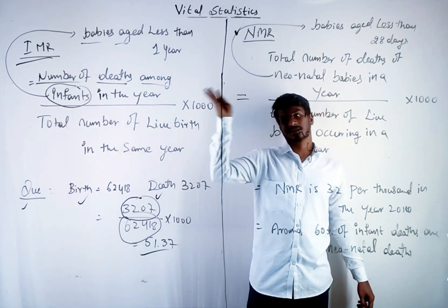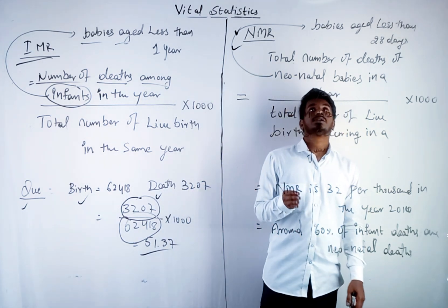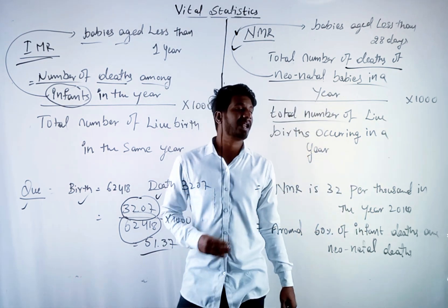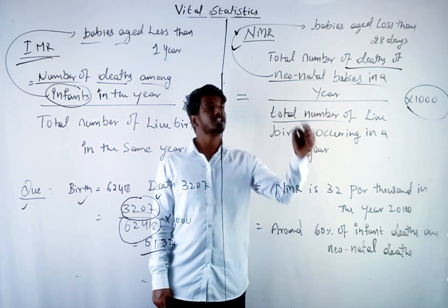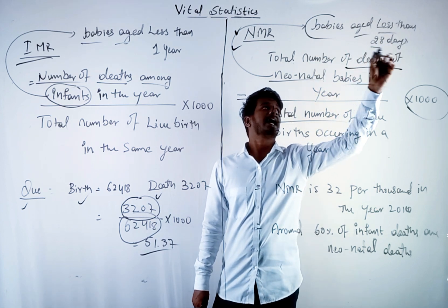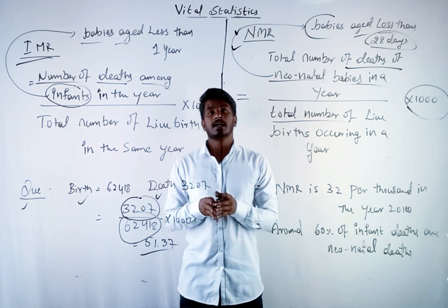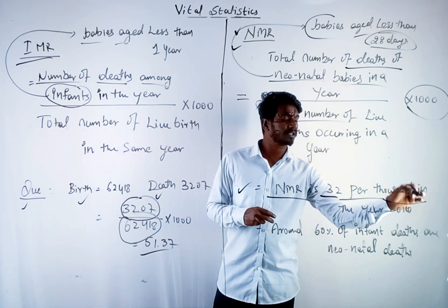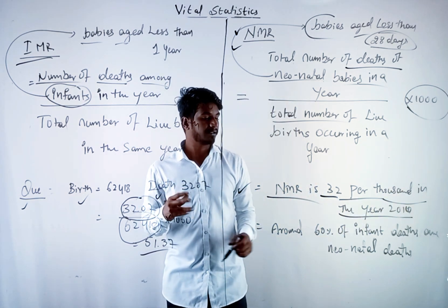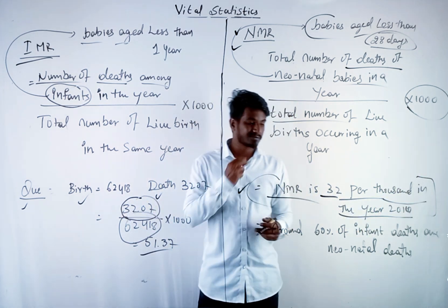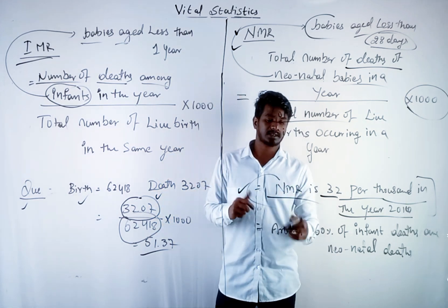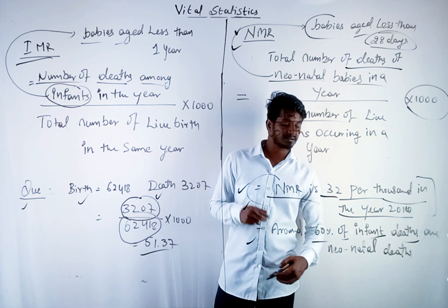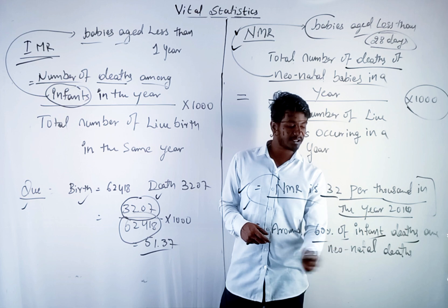Let us move to the next one, NMR. NMR's formula is total number of deaths of neonatal babies in a year divided by total number of live births occurring in a year into 1000. Here neonatal babies are babies aged less than 28 days. Let us see two important points regarding NMR. NMR is 32 per thousand in the year 2010. This can be asked for one or two marks. Around 60 percent of infant deaths are neonatal deaths.